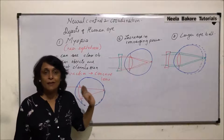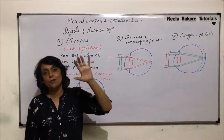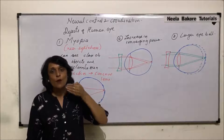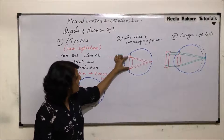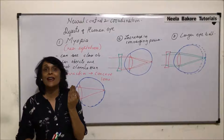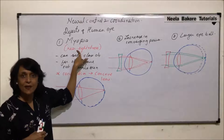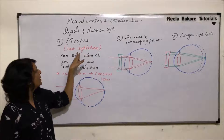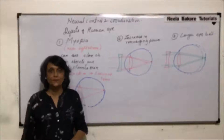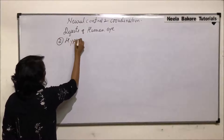One more thing: people suffering from myopia are not able to see objects far away. But if the object is moved closer, the focus shifts backward and they start seeing it clearly. That means they can see objects which are near them but not farther objects. Because they can see near objects, they are called near-sighted, and this defect is called myopia.